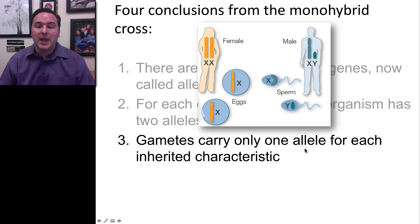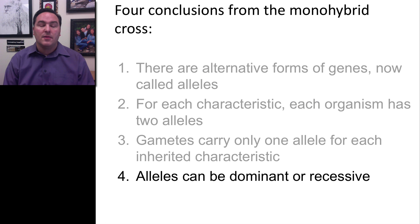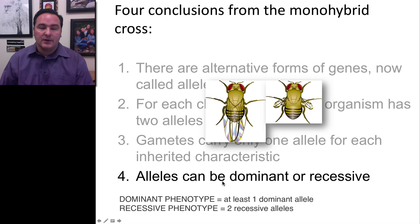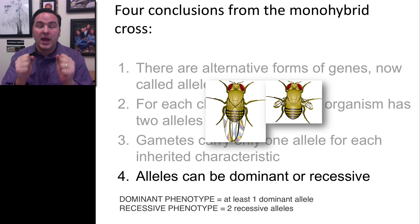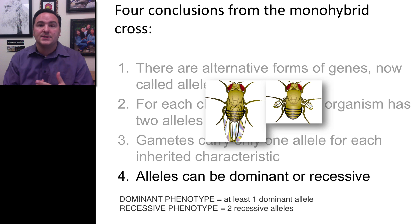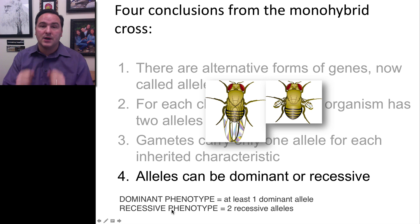Therefore, gametes only carry one allele for each inherited characteristic. The fourth conclusion is that alleles can either be dominant or recessive. In the case of fruit flies, having wings is dominant to not having wings, or having the vestigial form. The dominant phenotype is expressed if you have at least one dominant allele — you can have both chromosomes carrying it, or just one. But if you have one dominant and one recessive allele, you still express the dominant phenotype. The recessive phenotype is only expressed when both alleles are recessive.